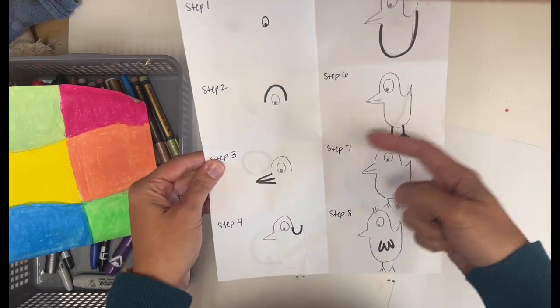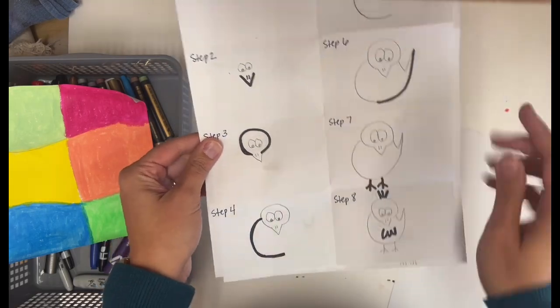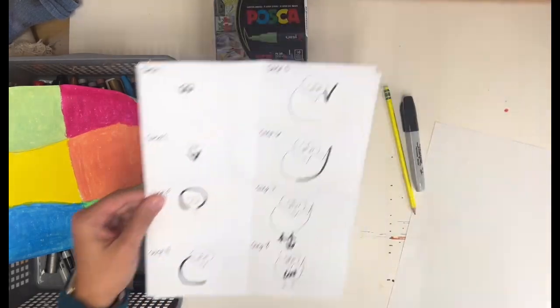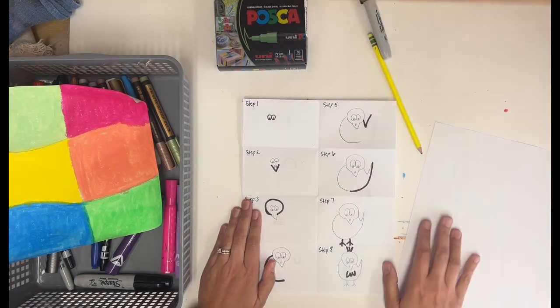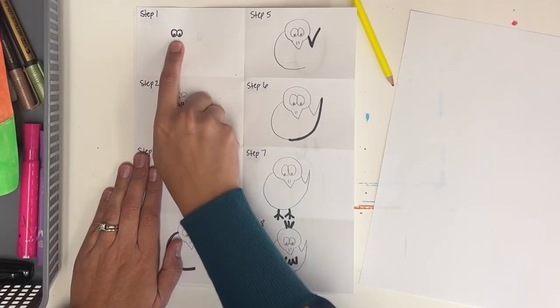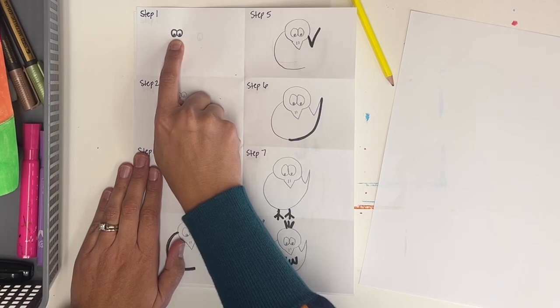So we have one bird that's looking to the side, and then we have one bird that is looking straight at us. So let's go over these birds real quick. I want to show you how these handouts work. These will be at your table. And it says step one, you draw the two eyes side by side with a little black pupil.